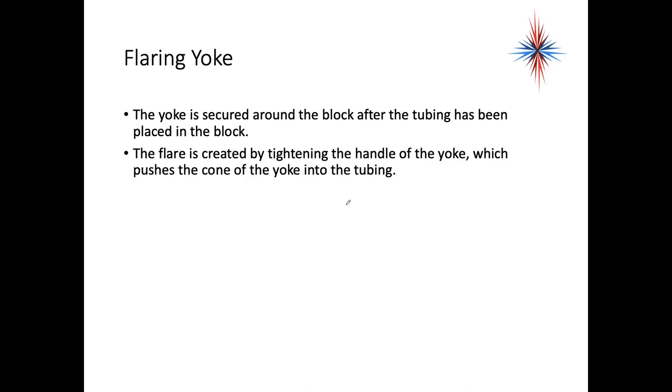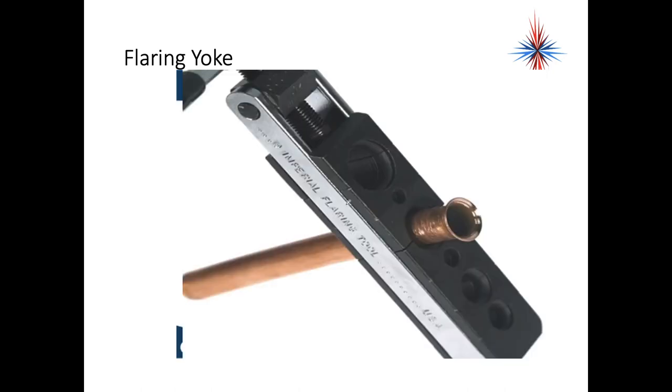The flare is created by tightening the handle of the yoke, which puts the cone of the yoke into the tubing. So what you're doing is you're basically creating a beveled end or flared out end on the piece of pipe.